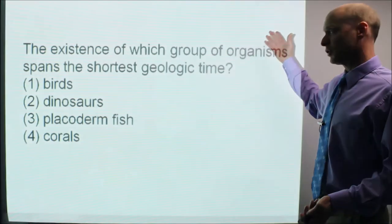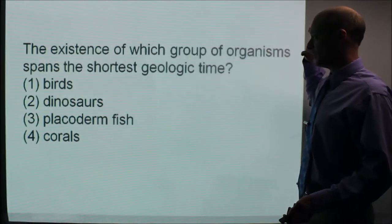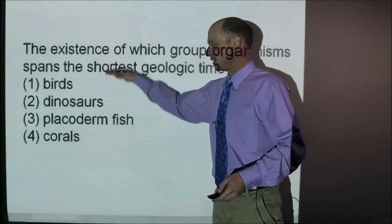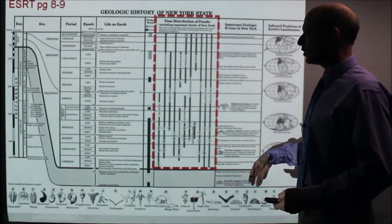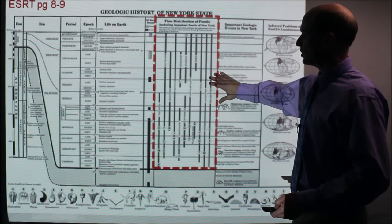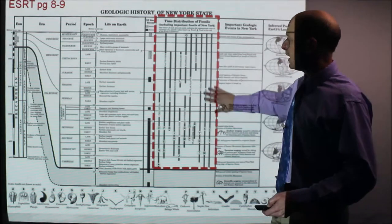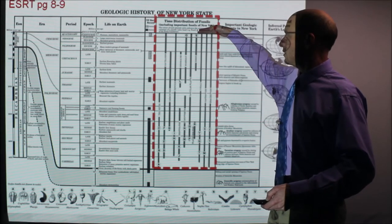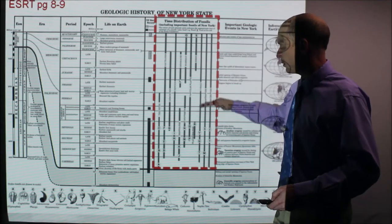Here's a question from a past Regents exam: The existence of which group of organisms spans the shortest geologic time period? The way to go here is to look at this section showing the timeline of when these organisms first came about and when they went extinct. This is today, the most recent, and as you go back it gets older.